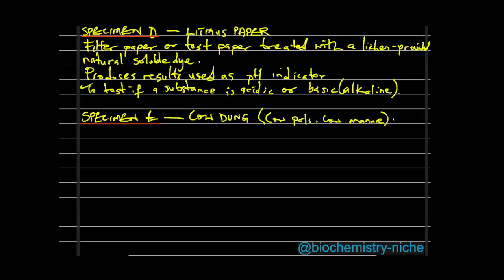Cow dung is the waste produced by bovine animal species — including cattle, bison, and buffalo. Specifically, it is the undigested residue of plant matter that has passed through the animal's gut.